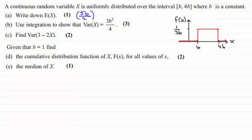Okay, welcome back then if you had a go. Now the first thing I'd want to do is just update this diagram. Remember, B is equal to 1, so this is going to be going from 1 to 4 and this will be a height of 1 third.